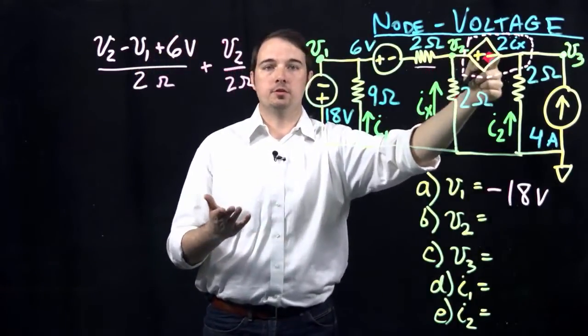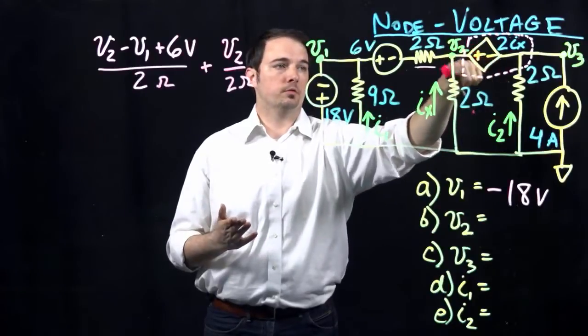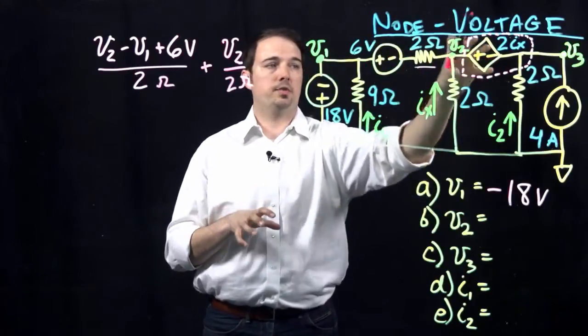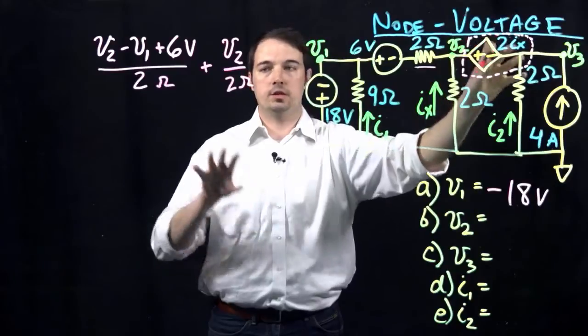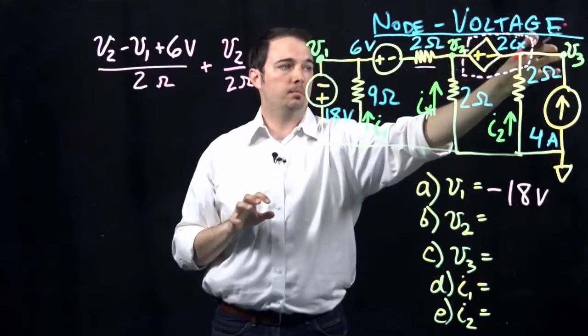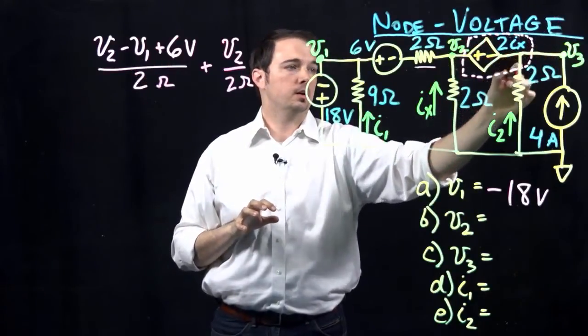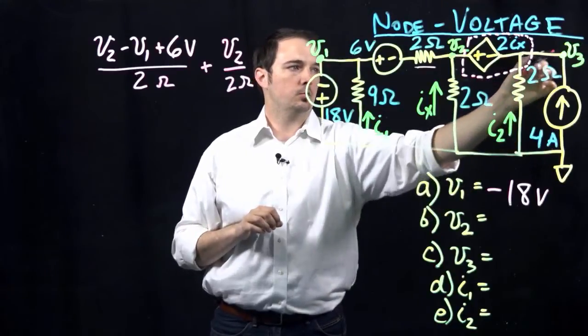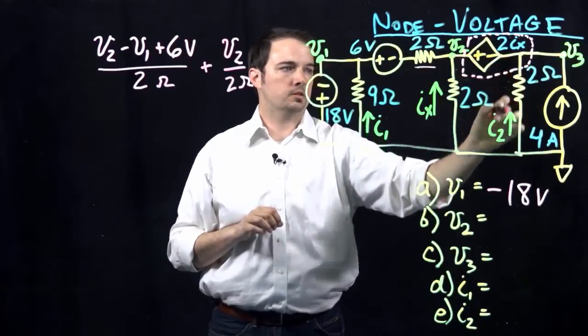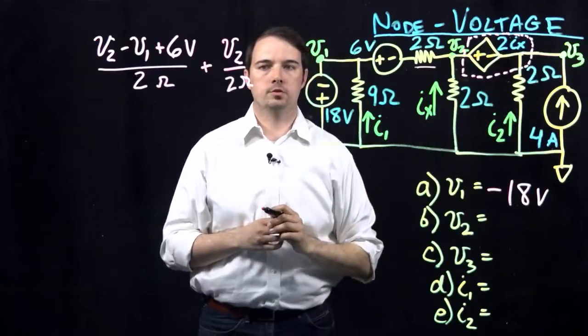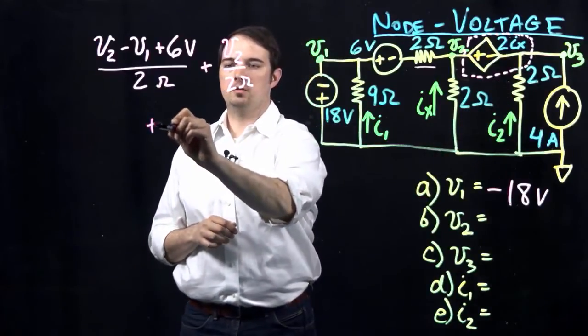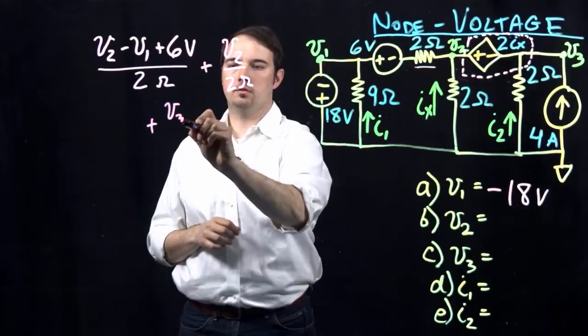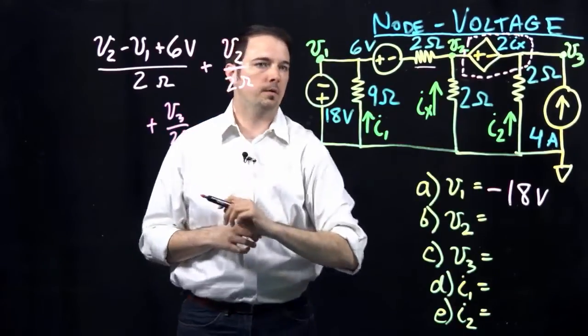Again, because we've done the supernode, we're sort of taking, imagine that we're taking out that dependent source right there, and so we're going to continue writing our equation, but from the basis of V3. So, again, I can see another branch here with a single resistor where I have a node voltage of V3. That's the voltage going to be dropped across that 2 ohm resistor. So, I can add this into my equation. So, plus V3 over 2 ohms, all right.